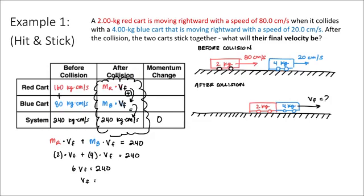That means the final velocity of the two cars together is 240 divided by 6. It's going to be 40 meters per second. That's positive, so it's going to be moving to the right, which is what I was expecting.